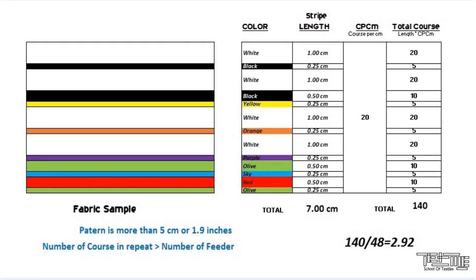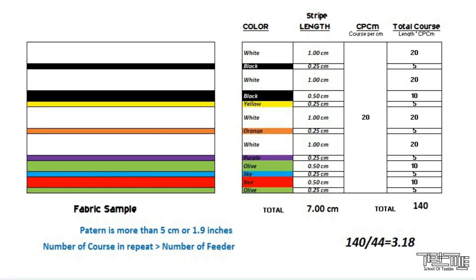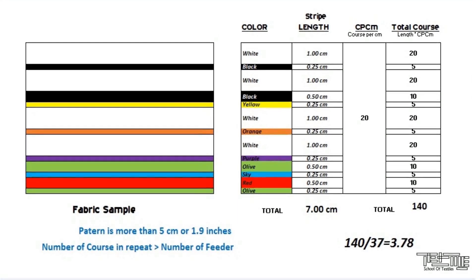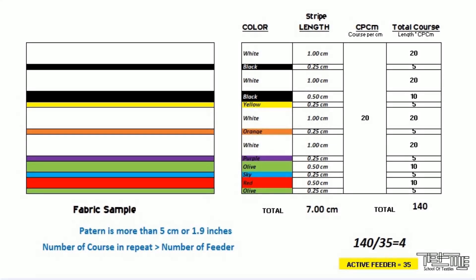To find the number of active feeders, first divide the number of courses in the repeat by the highest number of feeders. If the result is a whole number without any fraction, that is the feeder number. If not, decrease the feeder count by one at a time and divide the course number by it until a whole number is obtained. Note: if the resulting feeder number is lower than half of the total feeders, it will not be economically viable.